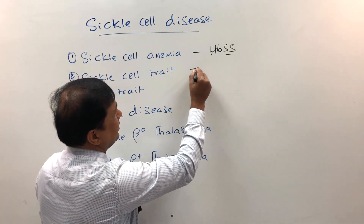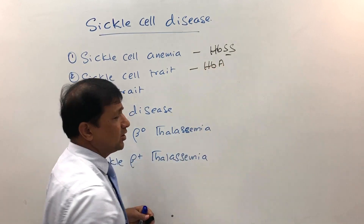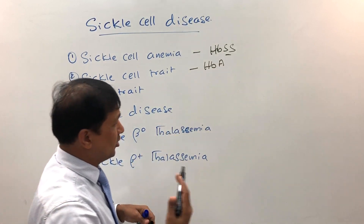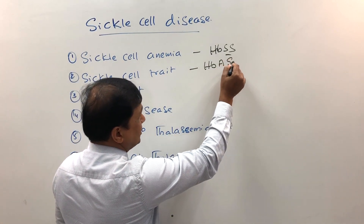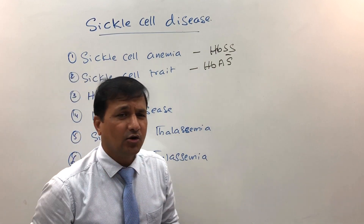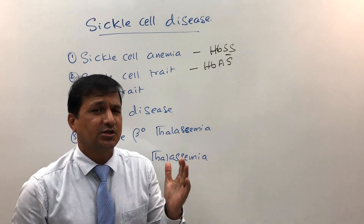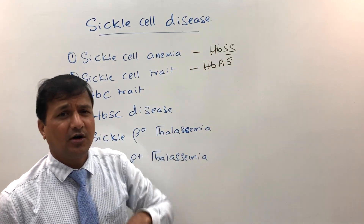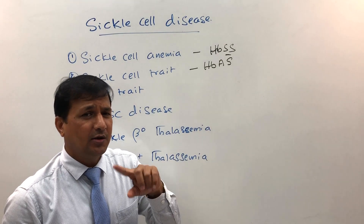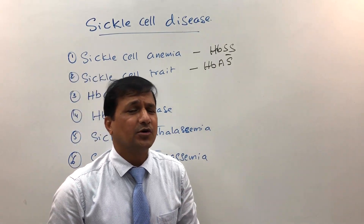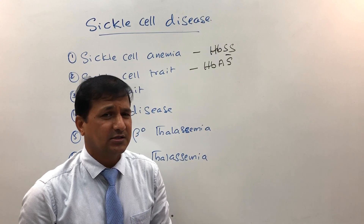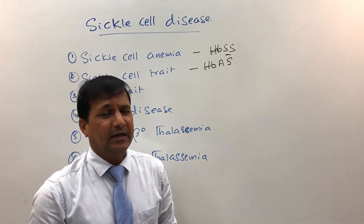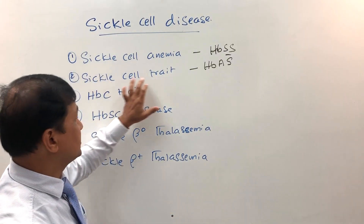In sickle cell trait, one beta globin in the hemoglobin molecule is normal adult hemoglobin and the other is of sickle type, meaning only one beta globin has glutamate at the sixth position changed to valine. A red blood cell containing one abnormal beta chain usually does not cause any clinical risk or signs and symptoms, so you do not see vaso-occlusion, micro-infarction, or splenomegaly in this condition.